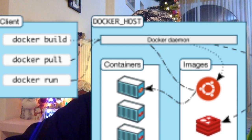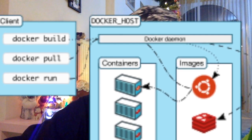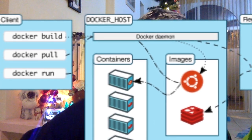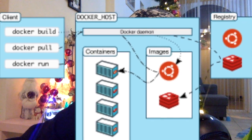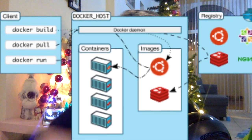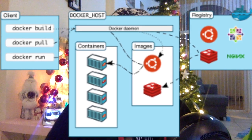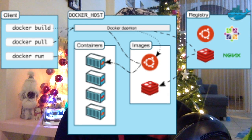Before we go any further, it's important to go over these Docker-specific terms. The daemon takes input from the Docker client — when you use a command like 'docker run', it gets sent from the client to the daemon, which carries it out using the Docker API. A Docker daemon can also communicate with other daemons on the same server or on the network. The Docker client is the primary way users communicate with the daemon, and one client can talk to multiple daemons.